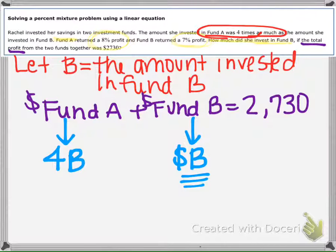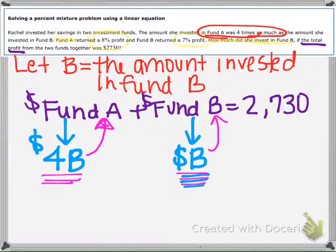So 4B represents the amount of money we're going to put into Fund A, and into Fund B we're going to put B.